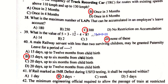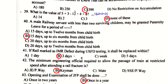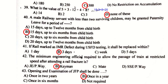A male railway servant with less than two surviving children may be granted paternity leave of 15 days, and it can be taken up to six months from childbirth.